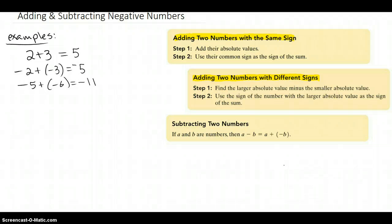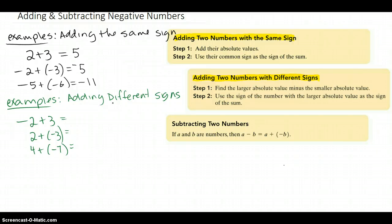Let's do some examples. Here are some examples of adding different signs. Here we have negative 2 plus 3. I'm going to find the larger absolute value minus the smaller, so 3 minus the 2, because the absolute value of negative 2 is 2. That's 1.